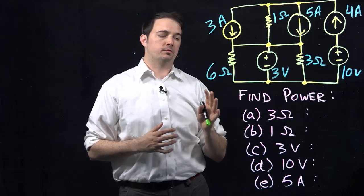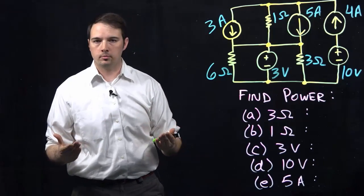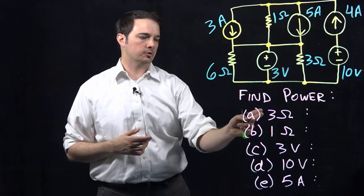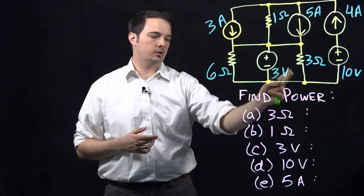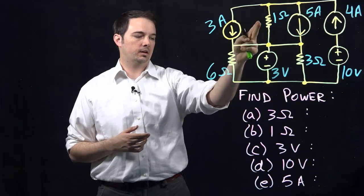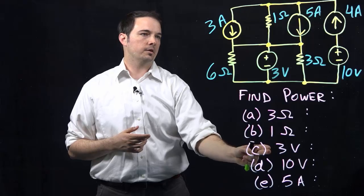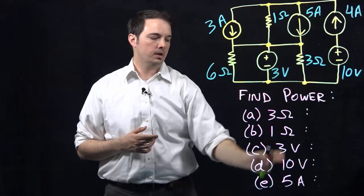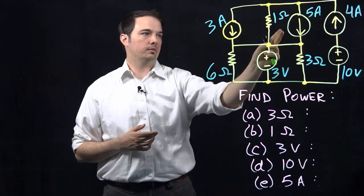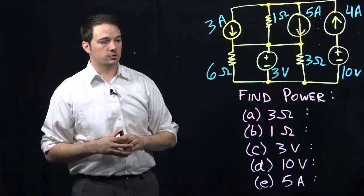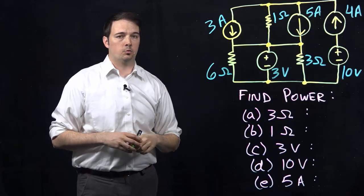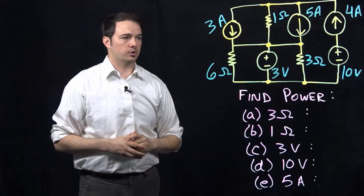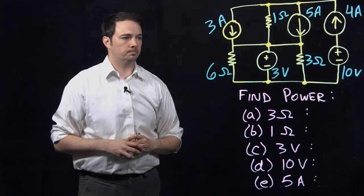What we want to do is evaluate what is the power being absorbed or dissipated by each one of these given elements: the 3 ohm resistor as indicated here, the 1 ohm resistor indicated here, the 3 volt source right here, the 10 volt source here, and the 5 amp current source right here. Let's get started with the first, looking at what's happening with the 3 ohm resistor.